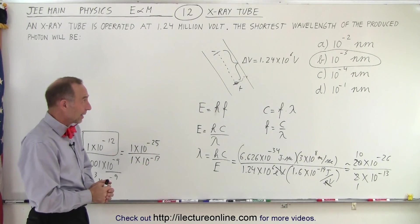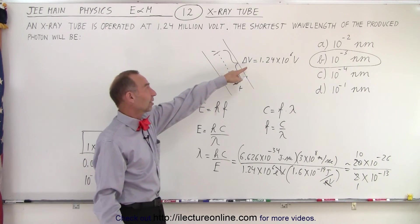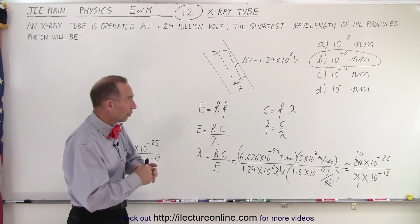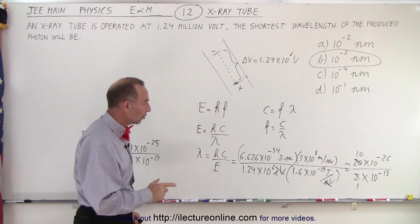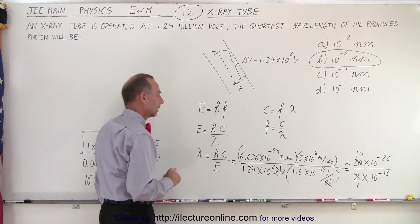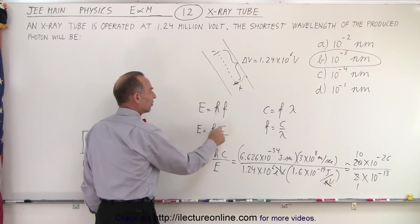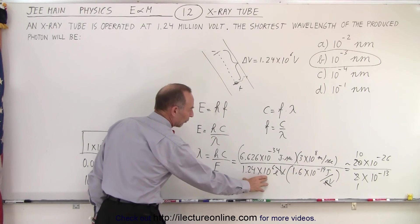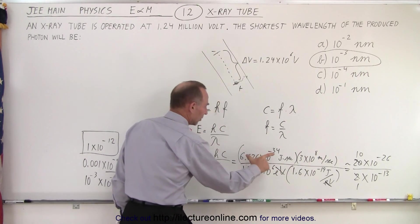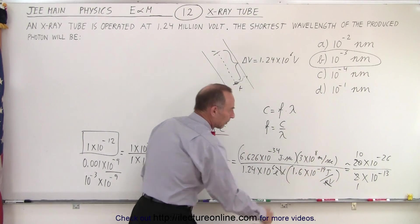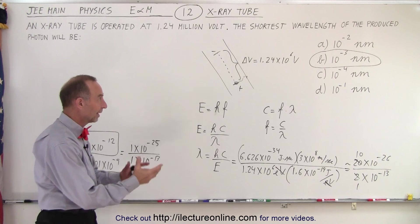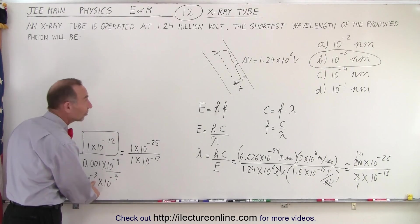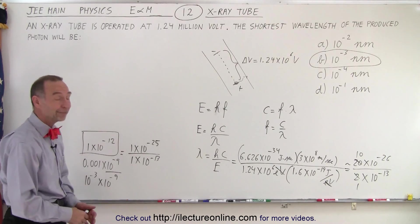Simply put: we give electrons energy by accelerating them across a potential difference of 1.24 times 10 to the 6th volts, which gives them that many electron volts of energy. We know the energy of a photon is H times F, which is H times C over lambda, so wavelength equals H times C over E. Since E is in electron volts, it must be converted to joules. Using Planck's constant and the speed of light with quick approximation arithmetic, the answer is 10 to the minus 12 meters, written as 10 to the minus 3 nanometers. And that is how it's done.